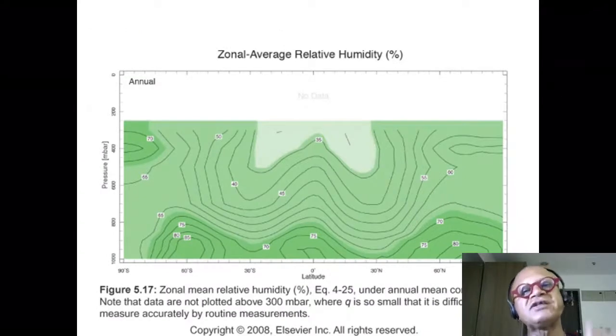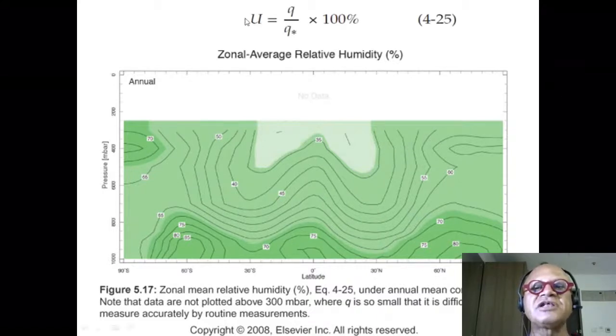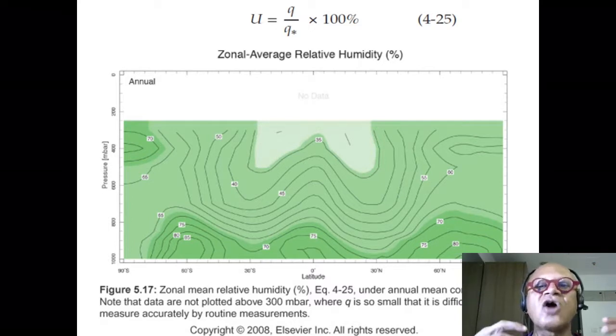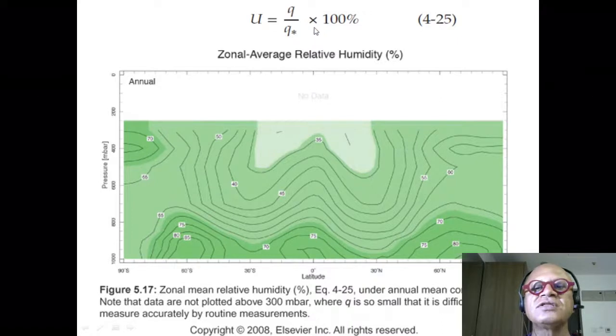So we defined the specific humidity and saturated specific humidity so that we can define this relative humidity as a percentage. So it's basically what we had defined before. It's the specific humidity, what is present in a given parcel of air divided by saturated specific humidity or how much water vapor it would have if it was completely saturated for that temperature. So it's Q over Q star times 100%.